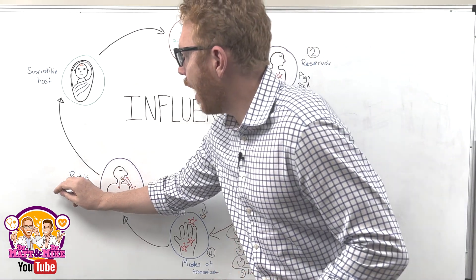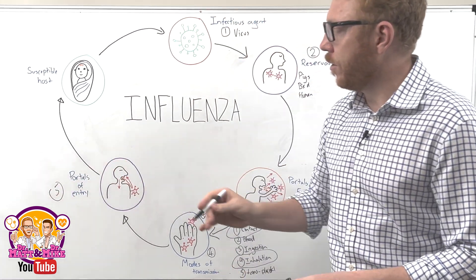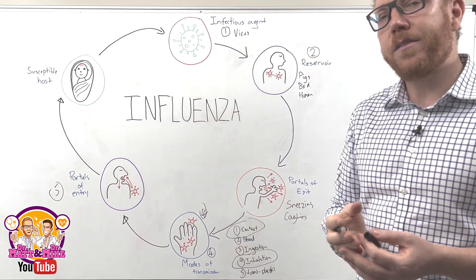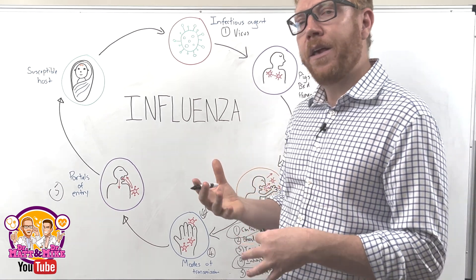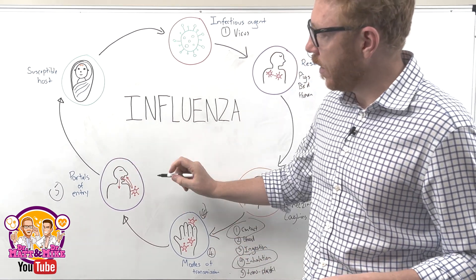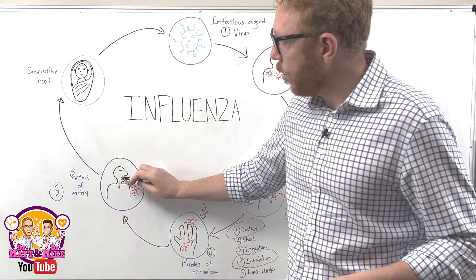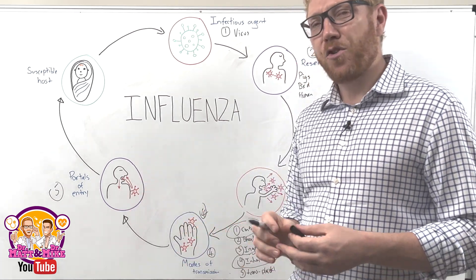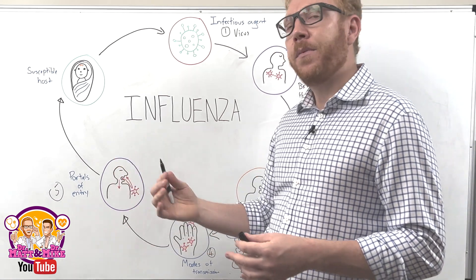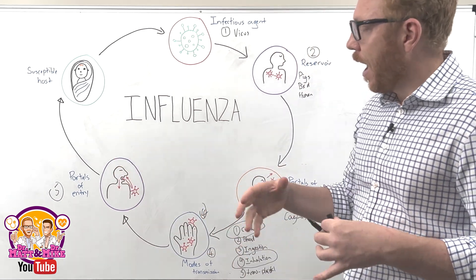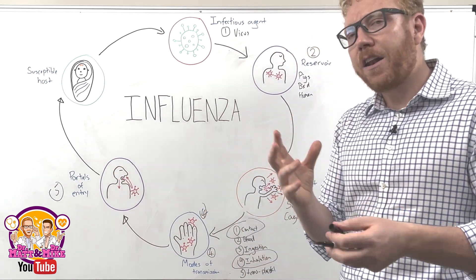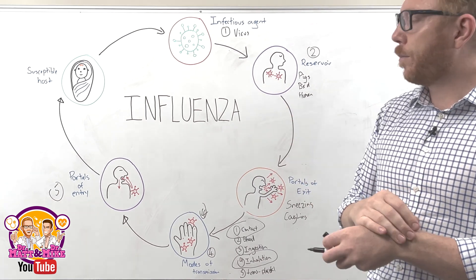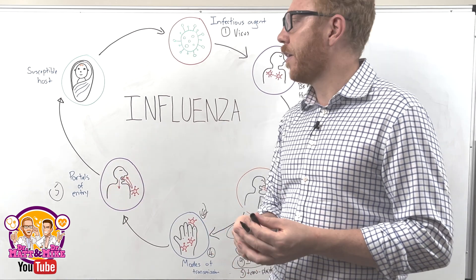Step five is how the agent gets into the next host — the portal of entry. Vulnerable entry points in the human body include the eye, nose, mouth, the airway and respiratory tract, the gastrointestinal tract, and the genitourinary tract. Entry through the skin is harder since skin is a good barrier, but breaches like cuts or abrasions can allow entry as well.